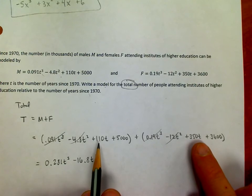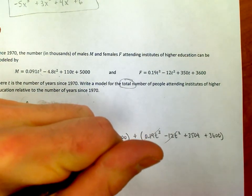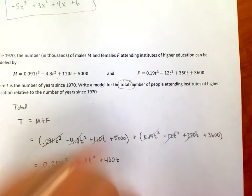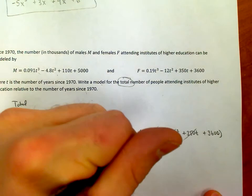As far as t's go, 350 plus 110 would be 460. Done with those. And then the last one is 5000 plus 3600, which is 8600.